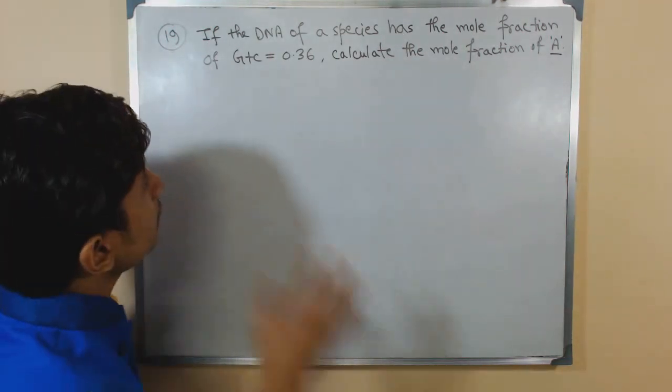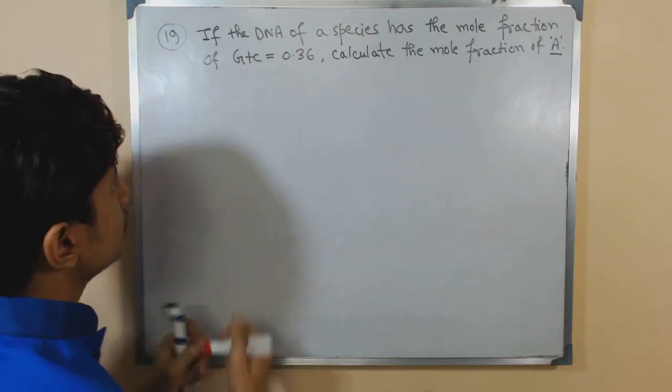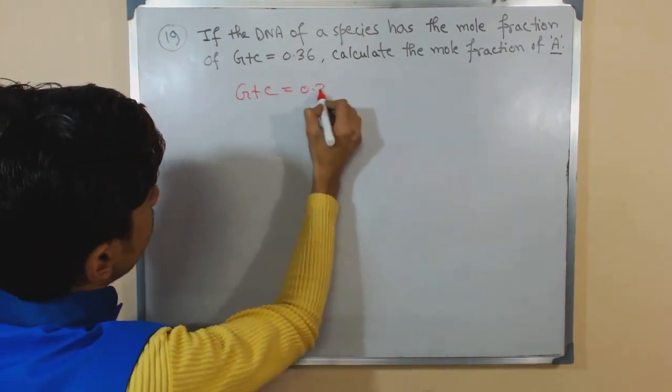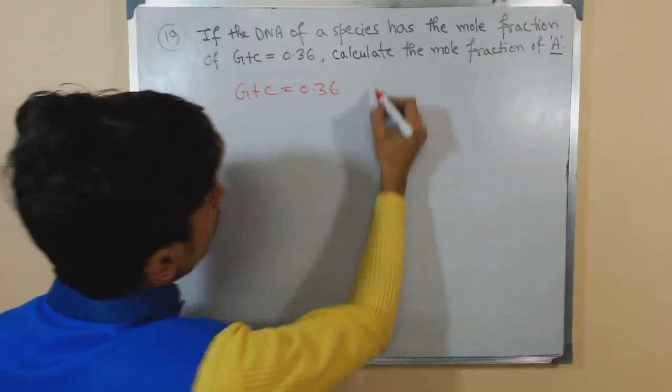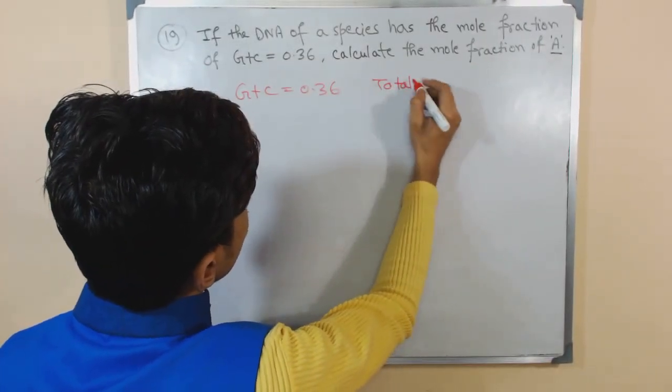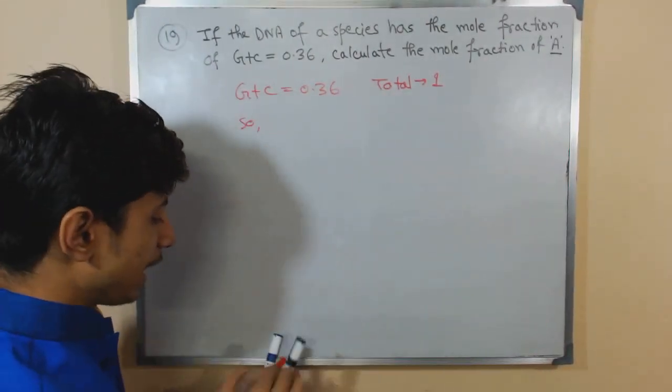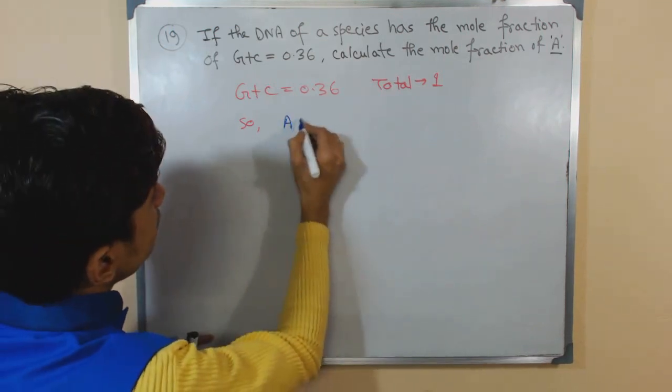Now let's focus on the question: if the DNA of a species has the mole fraction of G plus C as 0.36, the GC content here is 0.36. Remember, the total amount according to mole fraction is 1, so obviously the AT content...